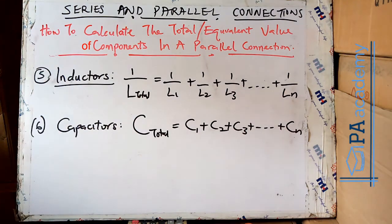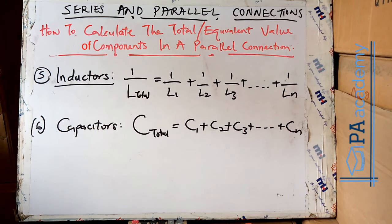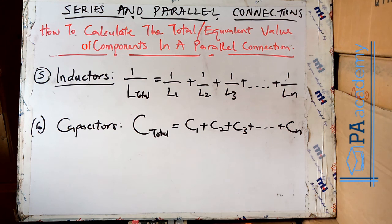So that is it on how to calculate the total and equivalent value of current, voltage, resistance, conductance, inductors, and capacitors in a parallel connection. We've come to the end of this video. If you just came across this part, the link for the series connection video is in the description. If you have any questions, leave them in the comment section below. If you are not subscribed to PA Academy, please click the Subscribe button and the bell icon. If you found this video helpful, please share it. I'll see you all in another video — thank you.